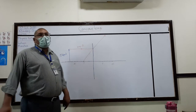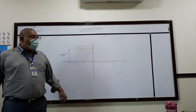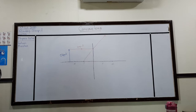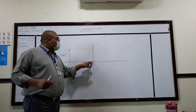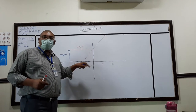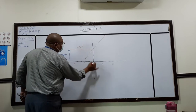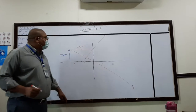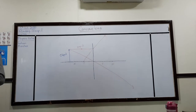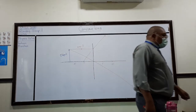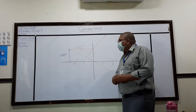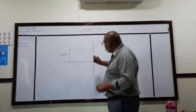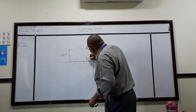Ray number two also starts from the head of the object and it passes through the optical center. Any light ray which passes through the optical center goes undeviated. You can see that the dotted line and ray number two intersect each other at a point — where they intersect, the image will be formed.